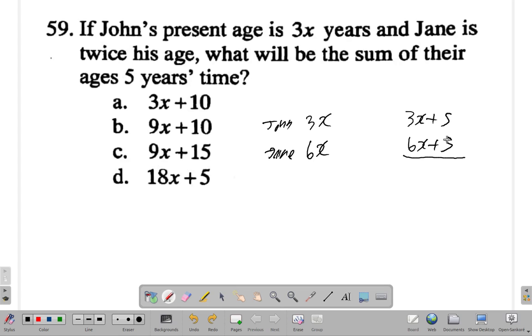You add their ages now. This is John's age, this is Jane's age. 5 plus 5 is 10, 3 and 6 is 9, 9x. So it's 9x plus 10. So the answer is B, question 59, B.